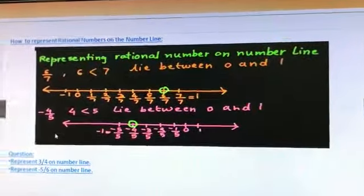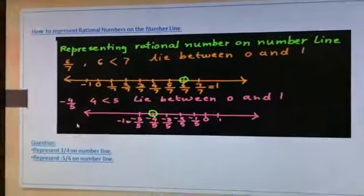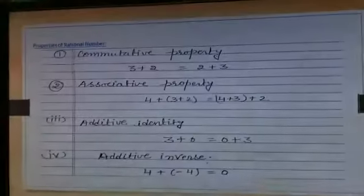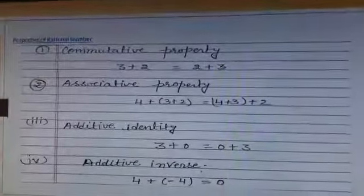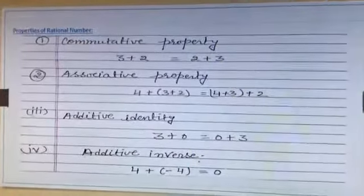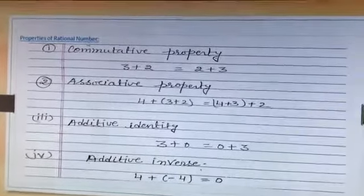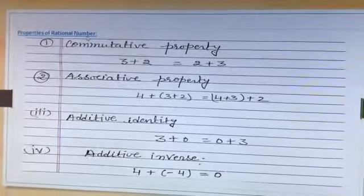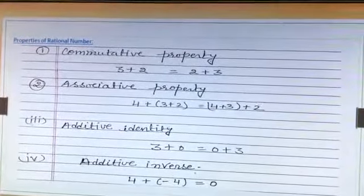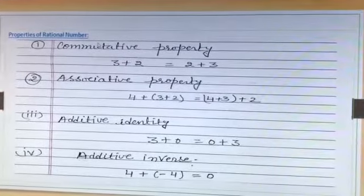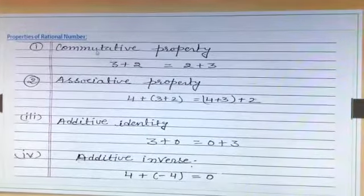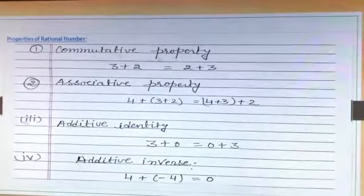I will give you questions, so please do it. Next topic is properties of rational numbers. I will explain these properties using whole numbers. First is commutative property.